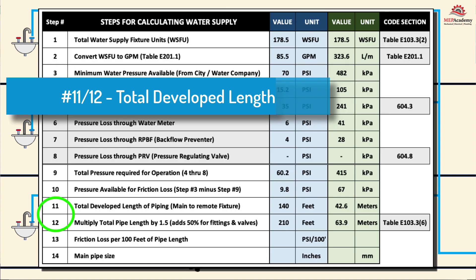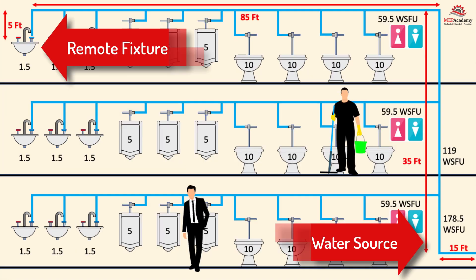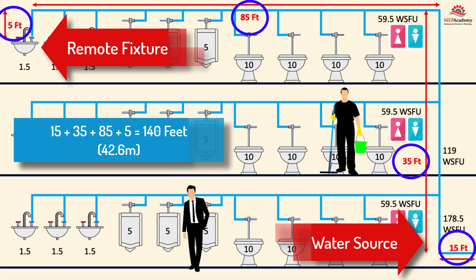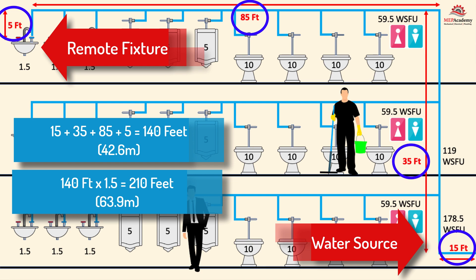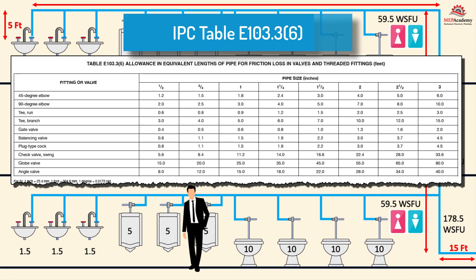Steps 11 and 12: Total Developed Length of Piping. This is the developed length of water piping from the water source to the most remote fixture, multiplied by 1.5 to account for pressure lost through fittings and valves, which add approximately 50% to the total length. In our example, there is a total of 140 feet (42.6 meters) from the source to the most remote fixture: 140 × 1.5 = 210 feet, or 42.6 × 1.5 = 63.9 meters of total developed length. If the exact number of fittings and valves is known, IPC Table E103.3.6 can be used to determine the equivalent length for each size and type.